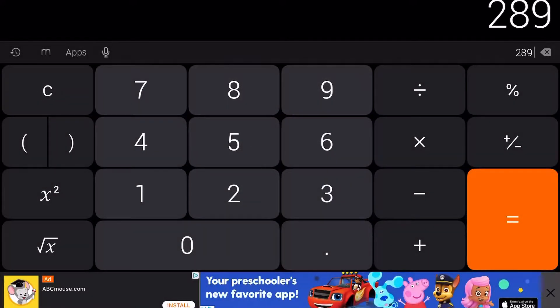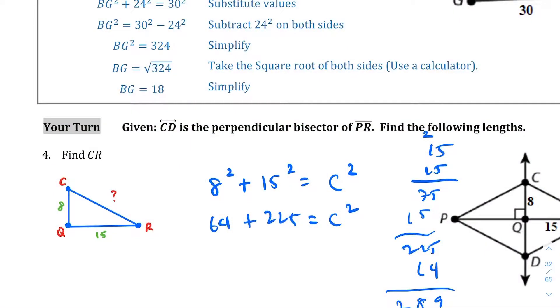289 squared, 17. So the square root of 289 happens to be, let me see, 289 equals C squared. We're going to square root both sides. We end up with 17 equals C. So CR equals 17. CR equals 17 is your answer.